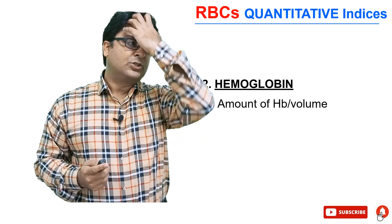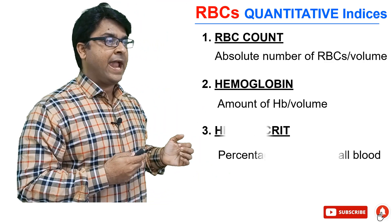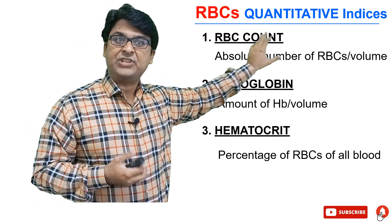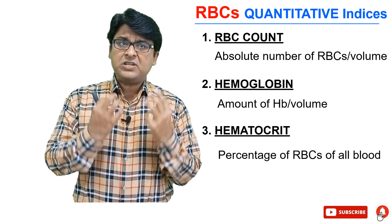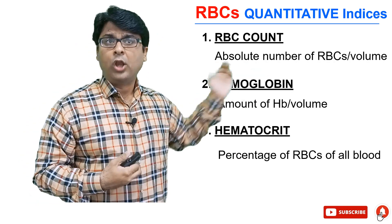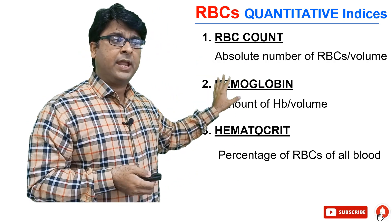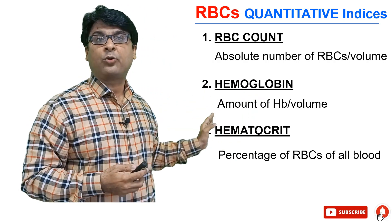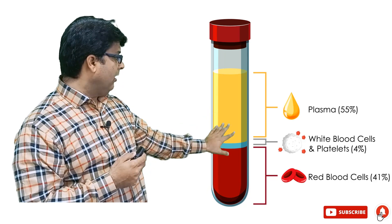Let's talk about RBCs first. When we look at a CBC report, there are different parameters associated with that. These three parameters are indicative of quantities associated with red blood cells. First is red blood cell count — the absolute number of red blood cells per unit volume of blood. Hemoglobin is the amount of hemoglobin per volume, another important parameter. And hematocrit is the percentage of red blood cells of the total blood, which I showed you in the earlier figure.